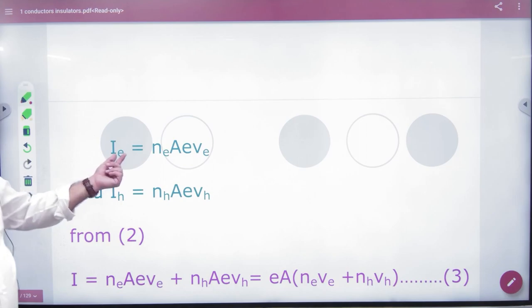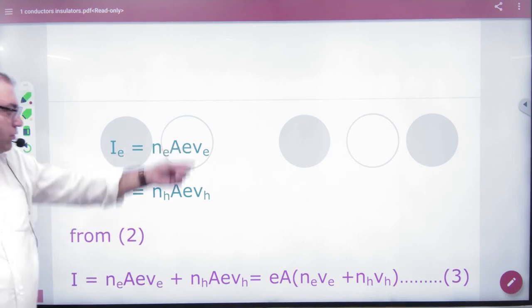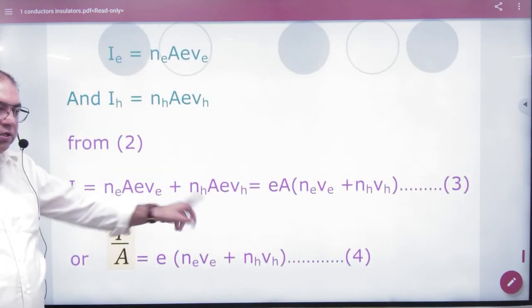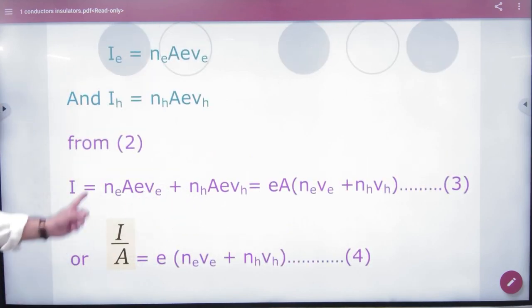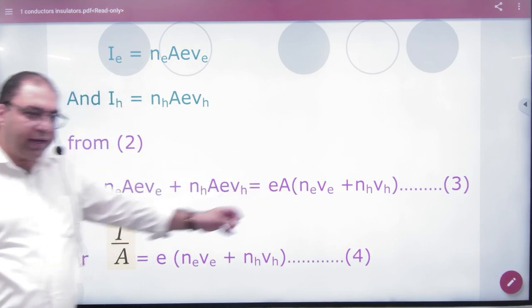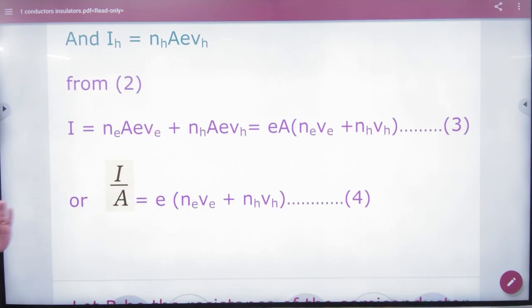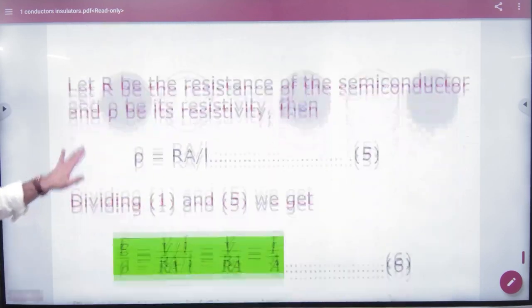Here I have electron. Sum of current in terms of drift velocities. Total current is sum of electronic and hole current. E into A common, so this is equation number three. I divided by A, so this is equation four. This equation, I by A ratio, I will show you how.